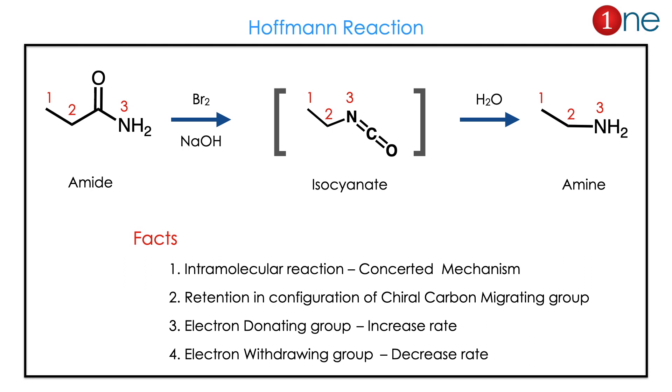The alkyl group moves towards the nitrogen. Here, the 1-2 group moves towards position 3, so you have the final product amine. The intermediate here is isocyanate.